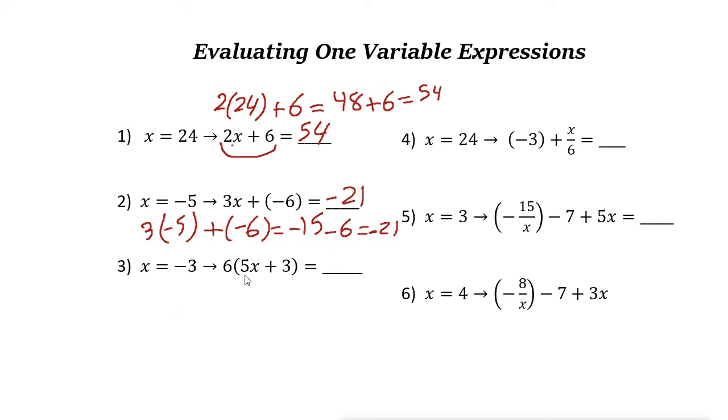Next one, x is negative 3. So here we have x. Let's just write everything else. 6 times 5 times negative 3 plus 3. Now 5 times negative 3 is negative 15. So it is 6 times negative 15 plus 3. Order of operations means just do the parentheses first. Negative 15 plus 3 is negative 12. 6 times negative 12 is negative 72.